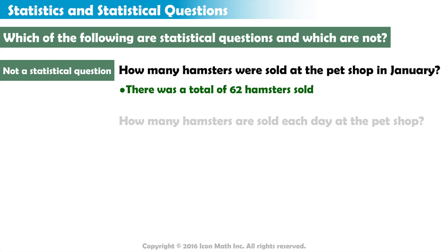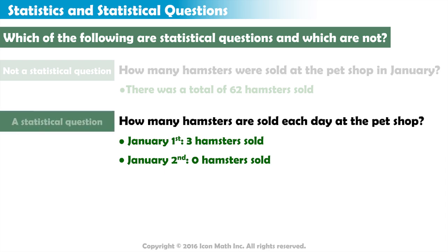What about the question, how many hamsters are sold each day at the pet shop? On January 1st, the store may have sold three hamsters, and then none on January 2nd. The number of hamsters sold each day varies, and since there is variability, this is a statistical question. To answer this question, we must collect data and use statistics to calculate about how many hamsters are sold each day.